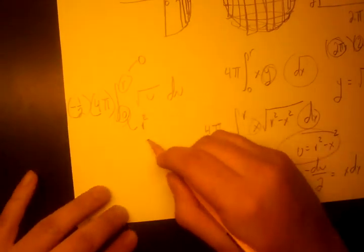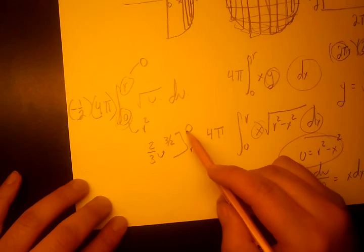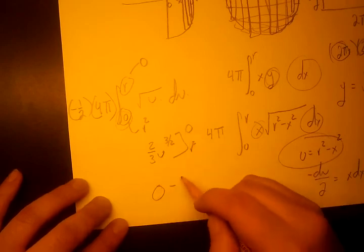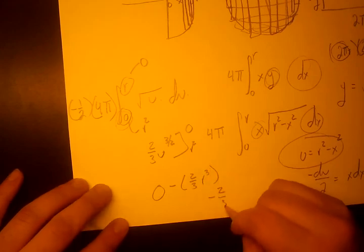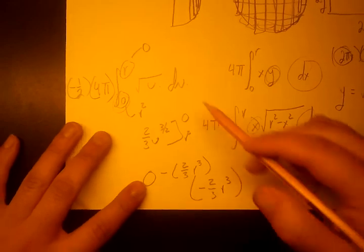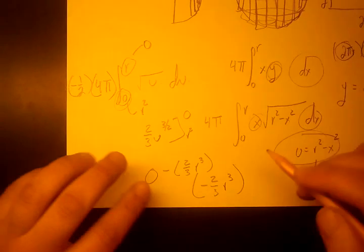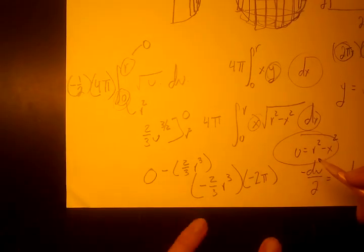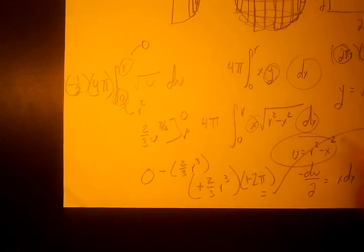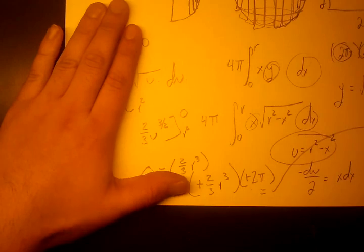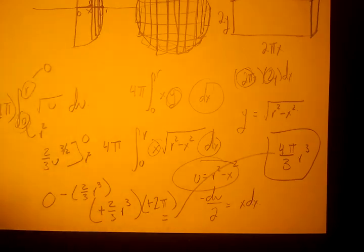Integrating this, we get 2 thirds u to the 3/2 going from r squared to 0. When we put 0 in here, it becomes 0. When we put r squared in here, it becomes negative 2 thirds r cubed. So we get negative 2 thirds r cubed out here. Don't forget this quantity out here, the constant. That's negative 2π because it's 4π times negative 1 half. A negative and a negative become a positive. Multiplying all this together, we get 4π over 3 r cubed, which we know as the volume of our sphere.